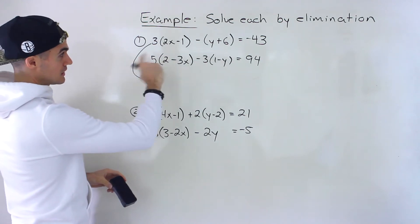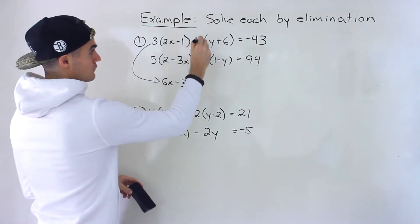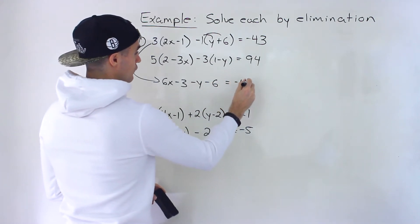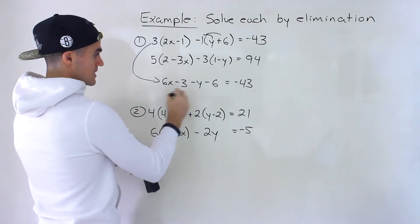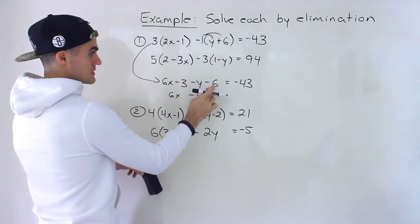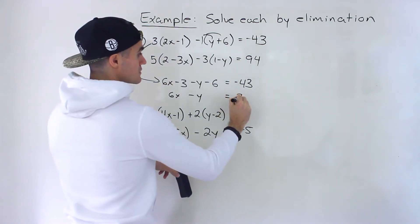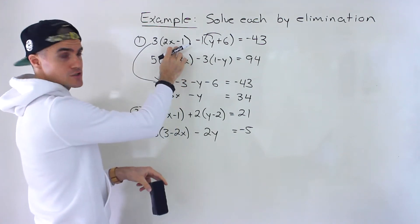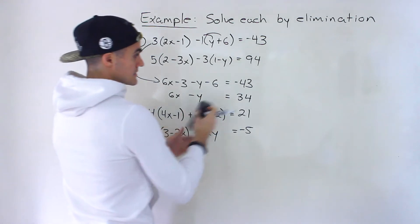Starting with the first line, I'm going to distribute the 3 in. So we'd have 6x minus 3. And then we got the negative 1 here — distribute that. So we'd have minus y minus 6 equals negative 43. The x and y I'm going to keep on one side. So the 6x minus y stays here. The negative 3, negative 6 — that's negative 9. When we bring that over, negative 43 plus 9 gives us... actually it's negative 34.